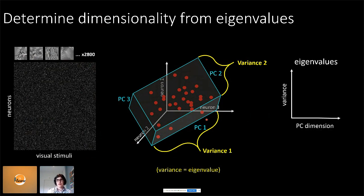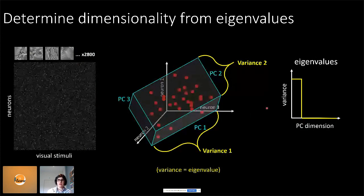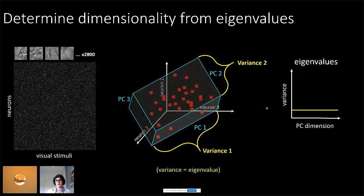For a low-dimensional system you'd get an eigenvalue spectrum with maybe three to five significant principal components and then zero — you can fit thousands of neurons into a three-dimensional box. Alternatively, a high-dimensional system would have a flat eigenvalue spectrum where all directions have lower but non-zero variance, meaning the system explores many different directions and can't be explained by a small box.